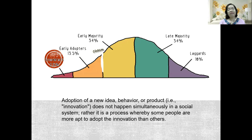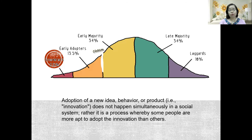Rogers tells us that there are several levels before an innovation actually becomes mainstream, and he presents a chart where adoption of a new idea, behavior, or product does not happen simultaneously in a social system. Rather, it is a process whereby some people are more apt to adopt innovation than others. He groups the population by when they adopt something new. The innovators are those who immediately adopt a new innovation — he labeled them as 2.5% of society.